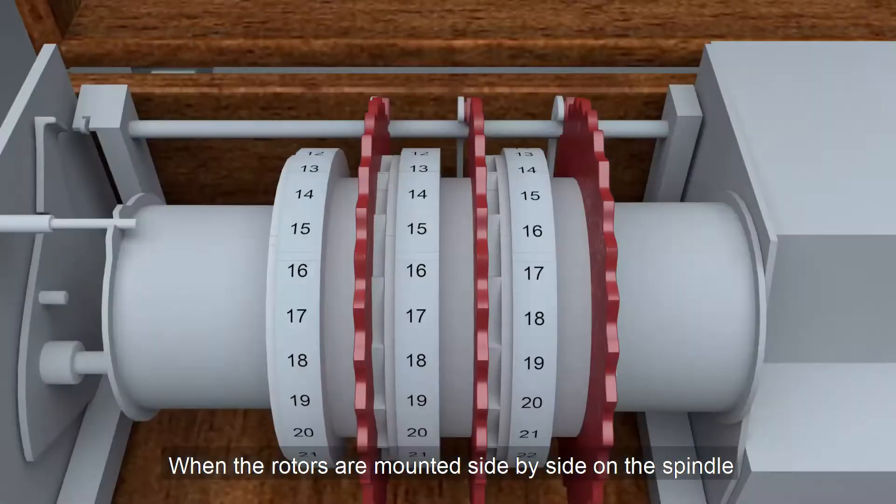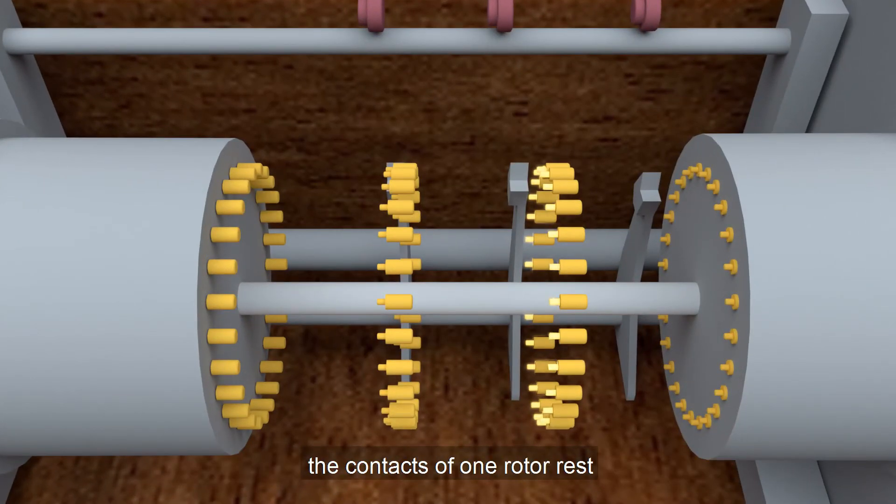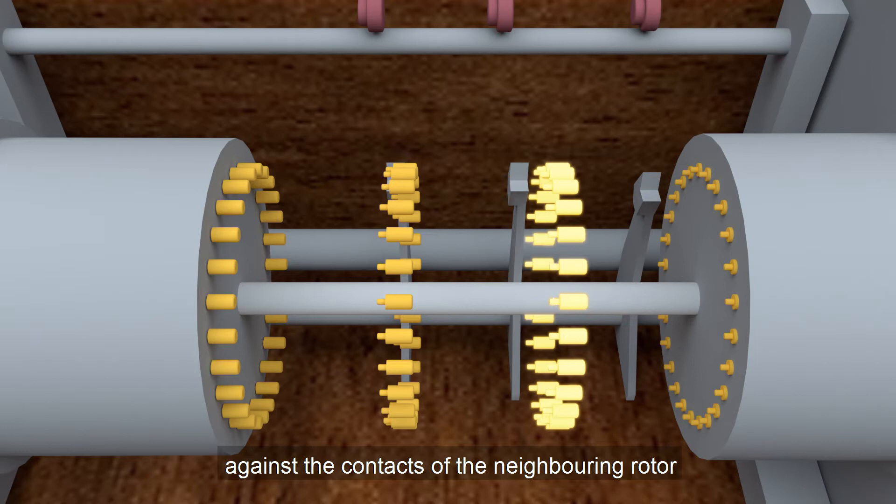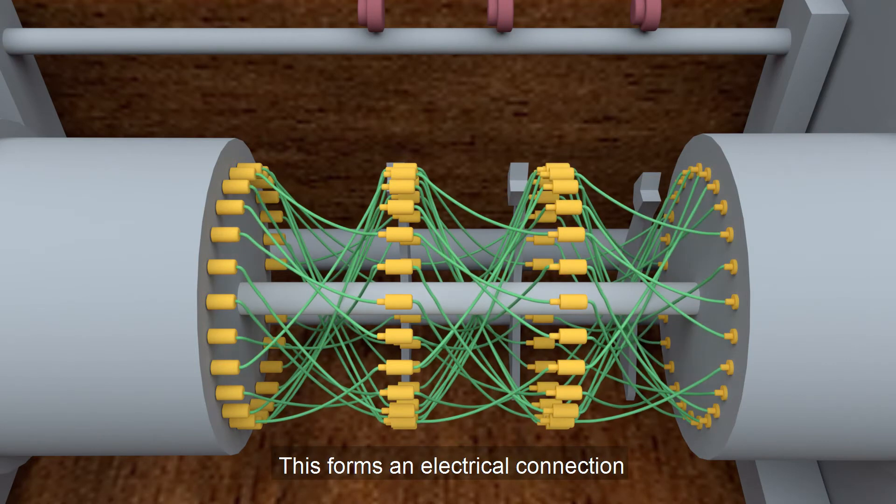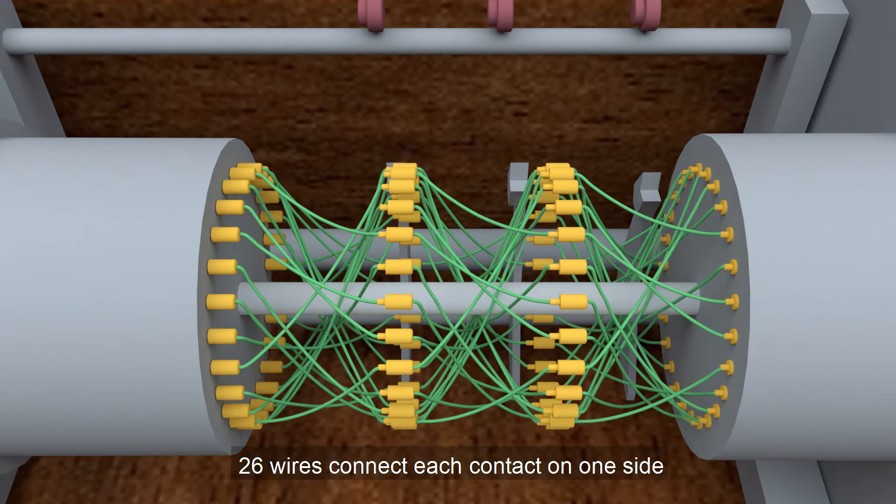When the rotors are mounted side by side on the spindle, the contacts of one rotor rest against the contacts of the neighboring rotor. This forms an electrical connection. Inside the body of the rotor, 26 wires connect each contact on one side to a contact on the other in a complex pattern.